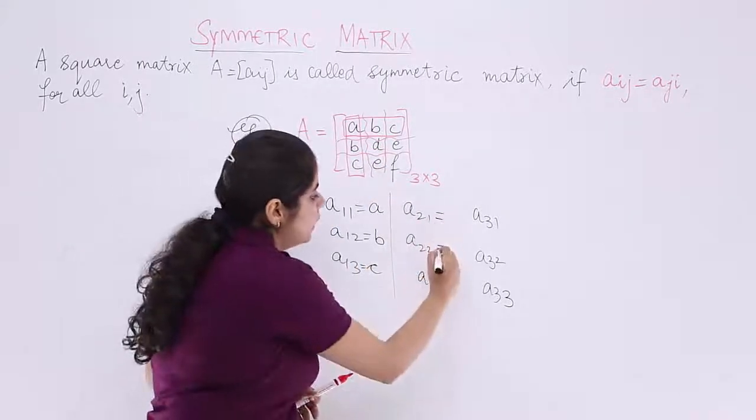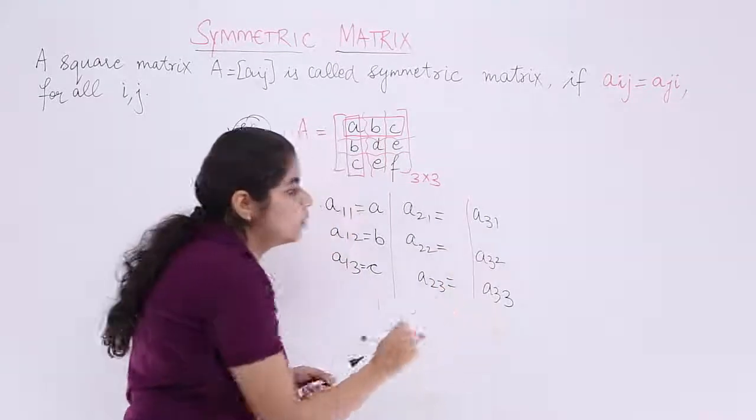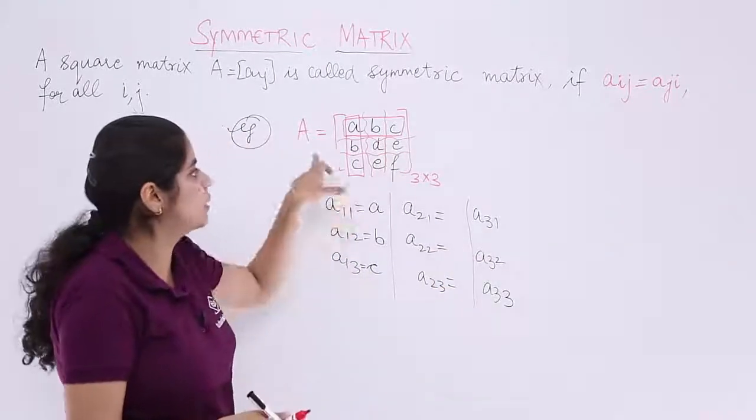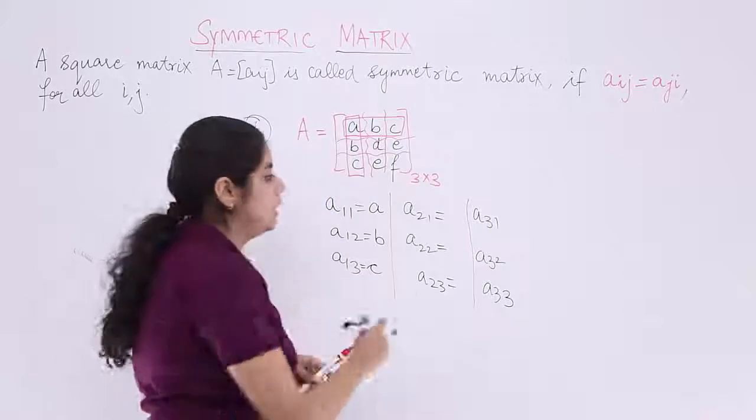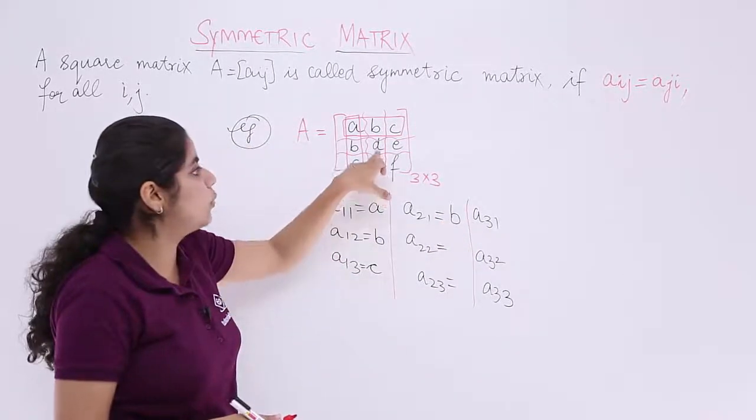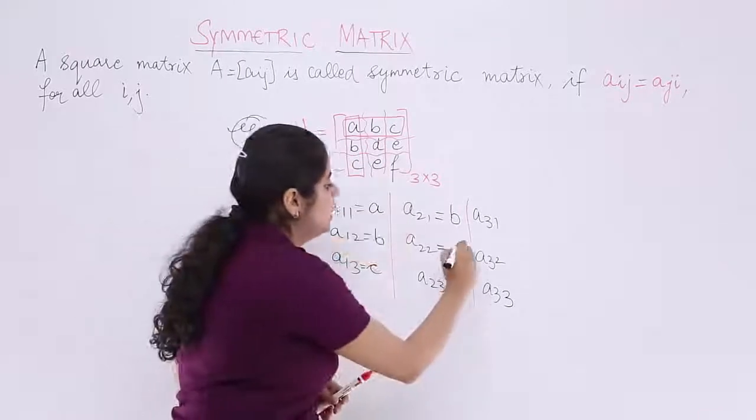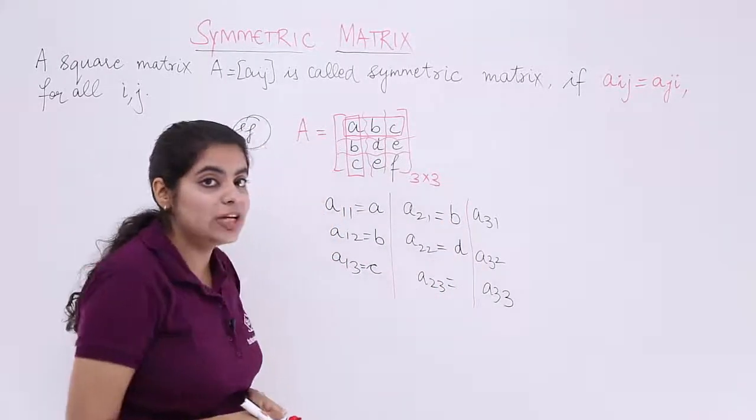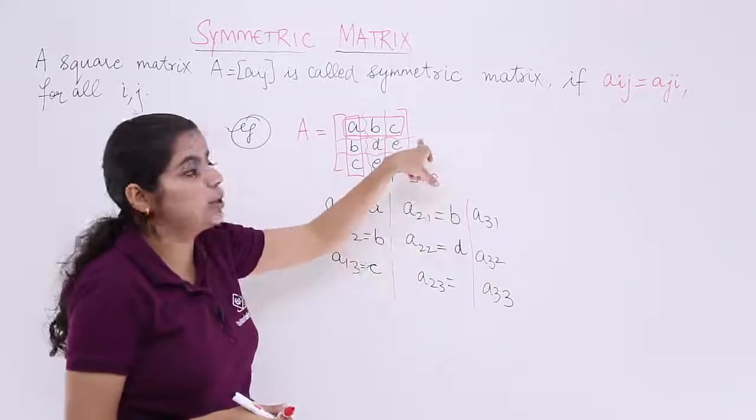Similarly, A21, A22, A23 we need to find. What is A21? Second row, first column, which is B. A22 means second row, second column, which is nothing but the central element D. A23, second row, third column, it is E.